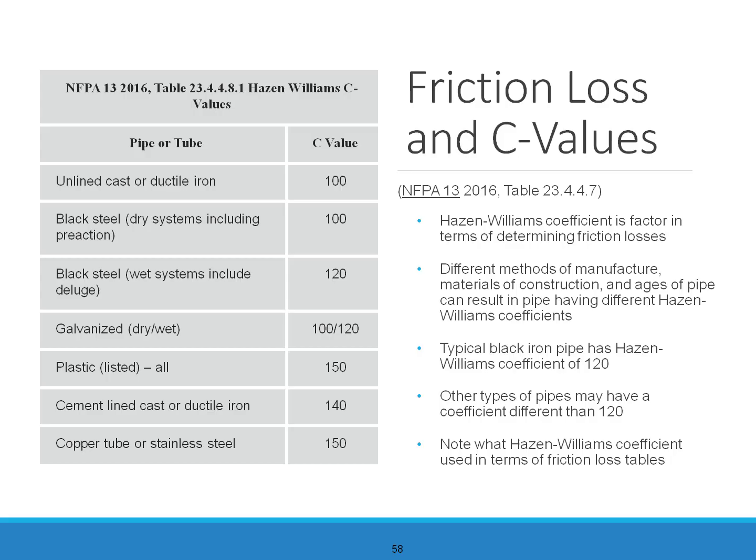Table 23.4.4.8.1 is the Hazen-Williams C-value table. So for an example, black steel for wet systems including deluge is 120.